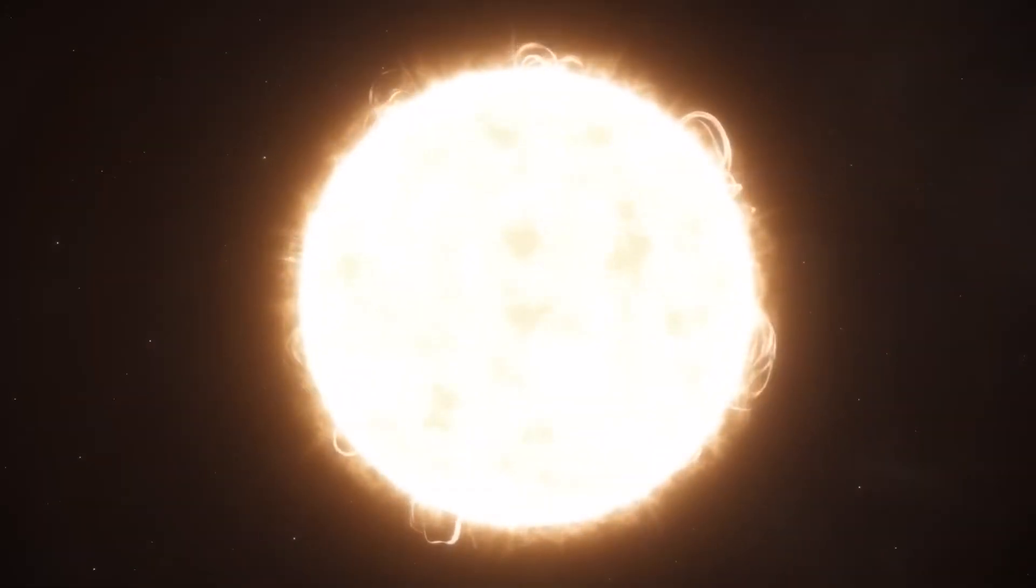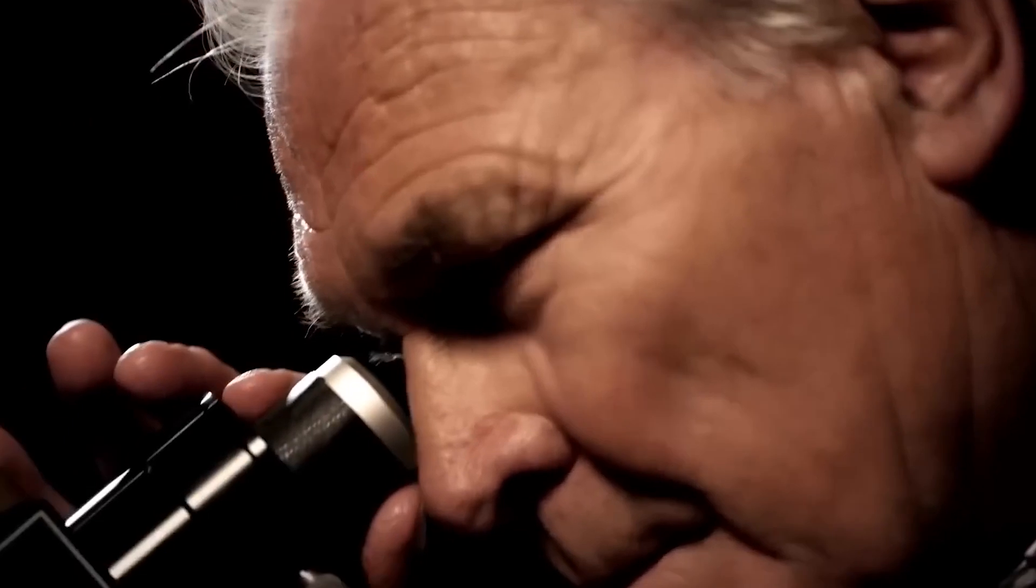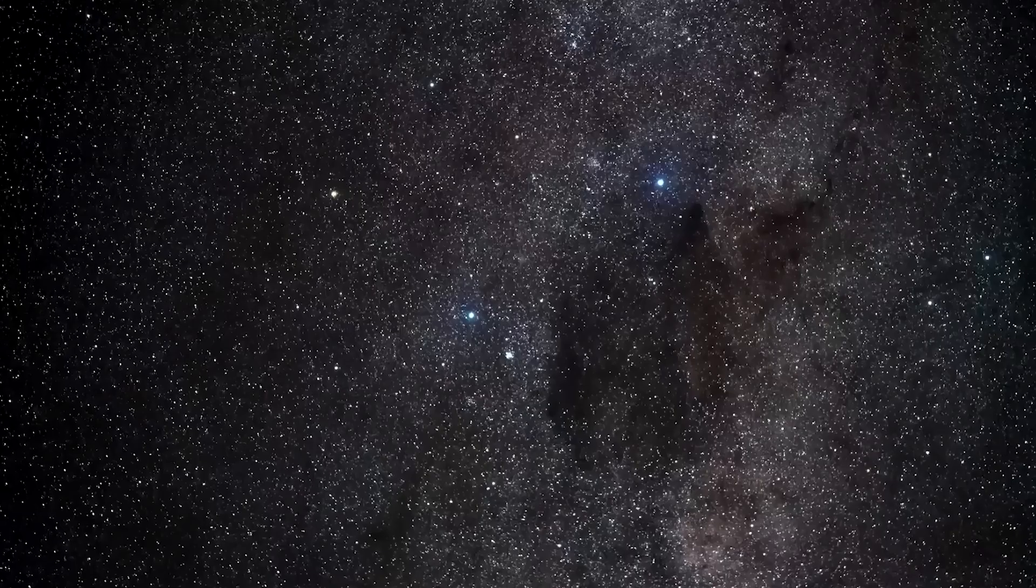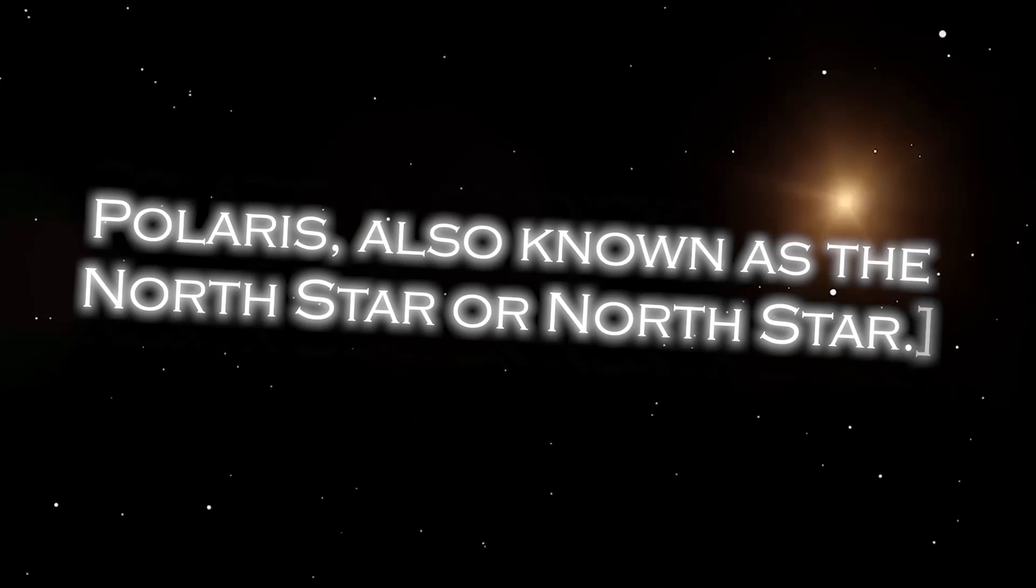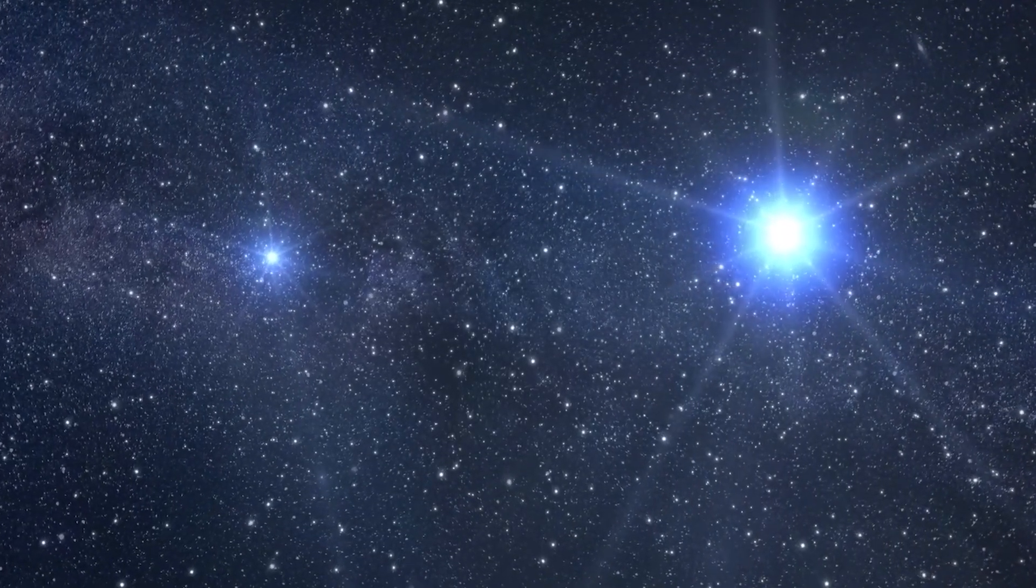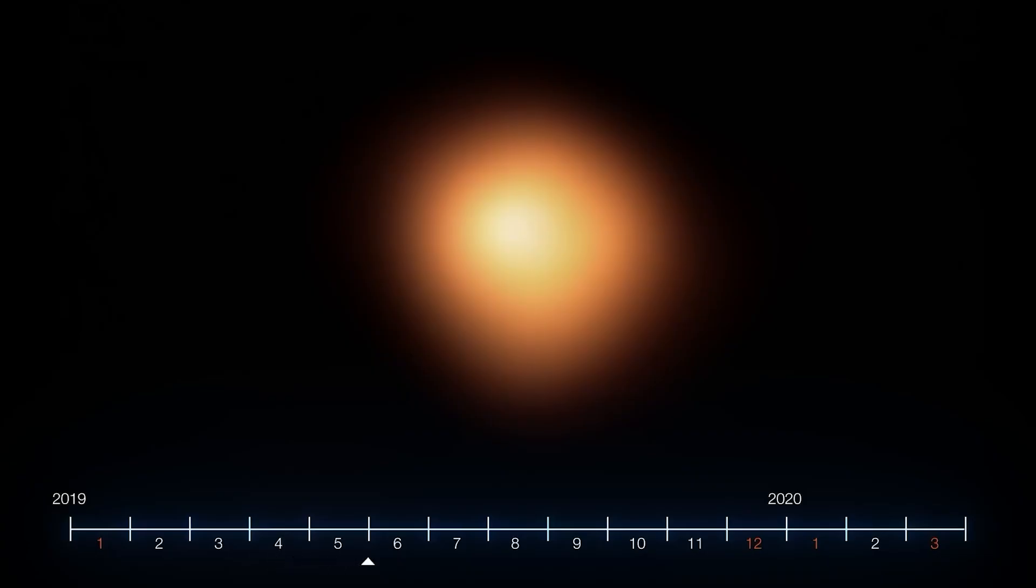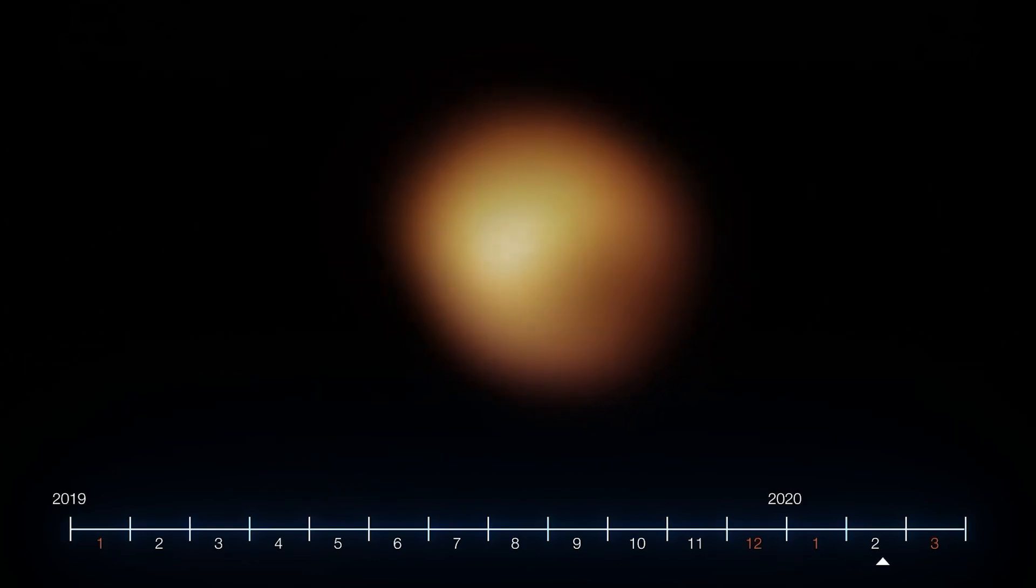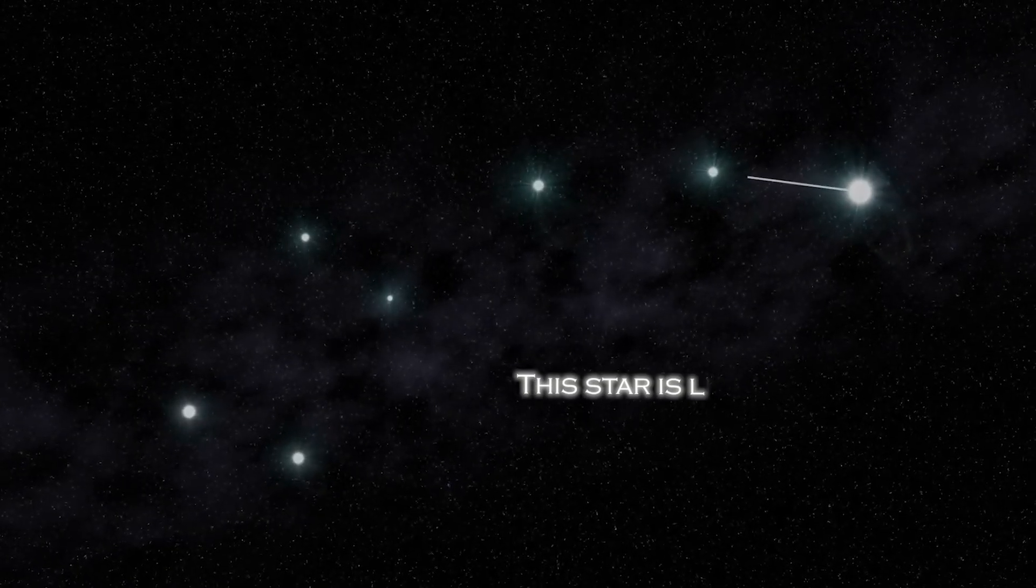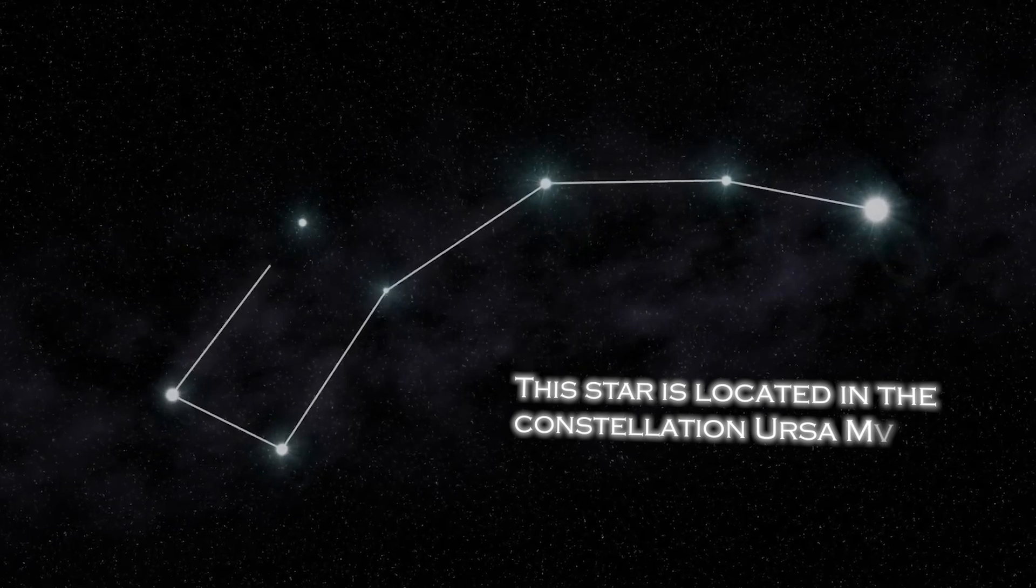Before we delve into the implications of this revelation, let's take a closer look at the star in question. Polaris, also known as the North Star, occupies a special position in the sky because of its proximity to the celestial North Pole. It is almost directly over the Earth's North Pole, which gives the illusion that it remains static in the northern sky. The star is located in the constellation Ursa Minor.